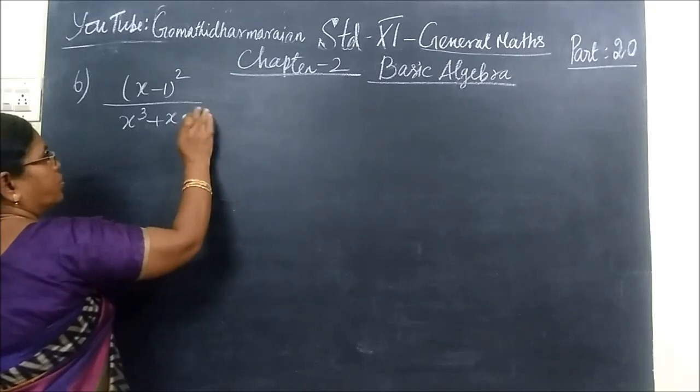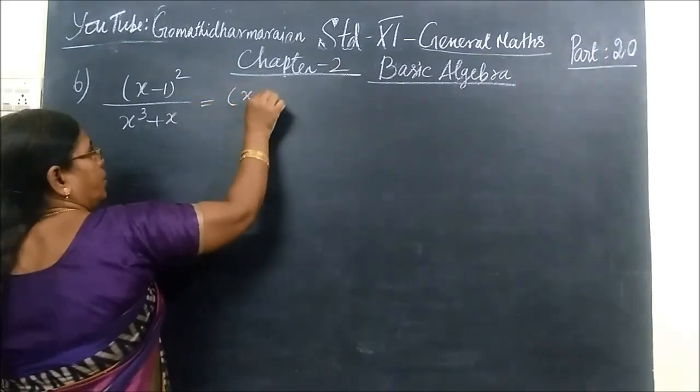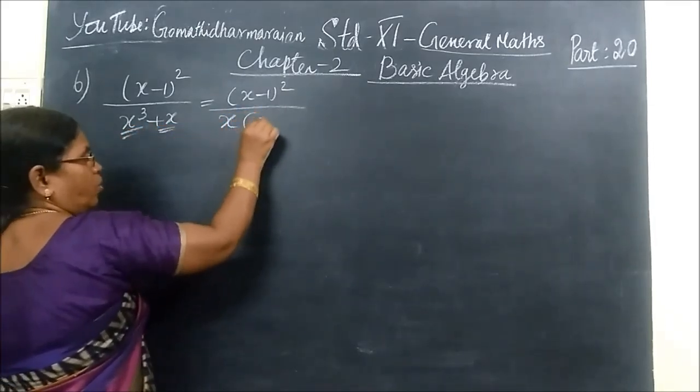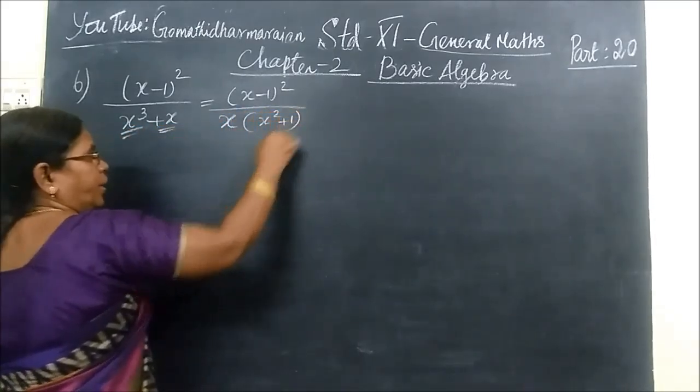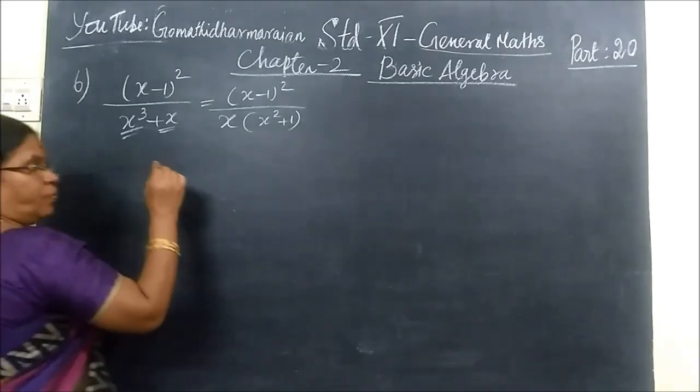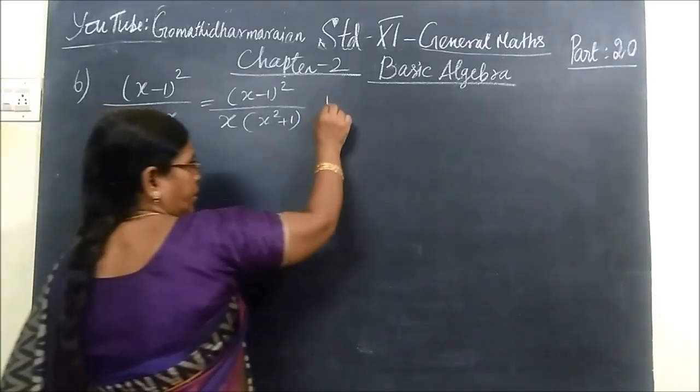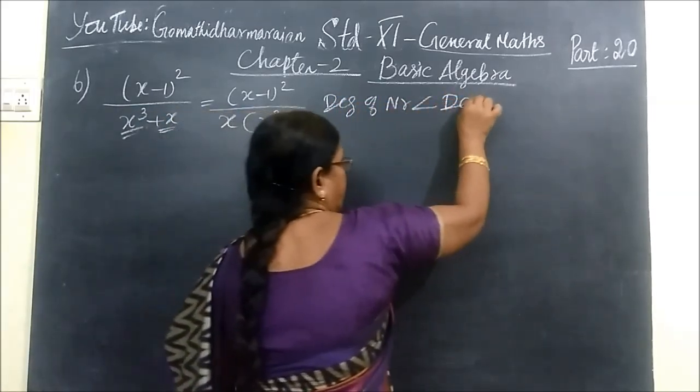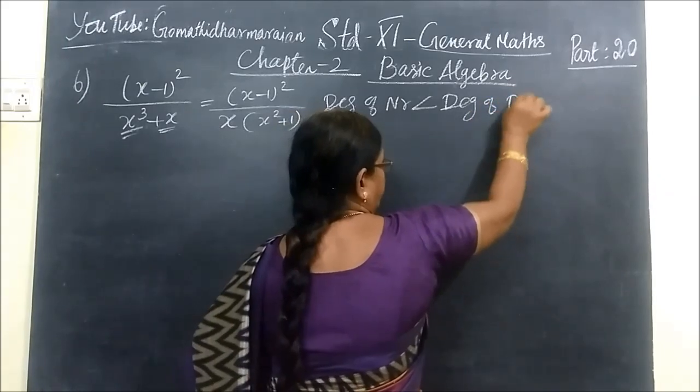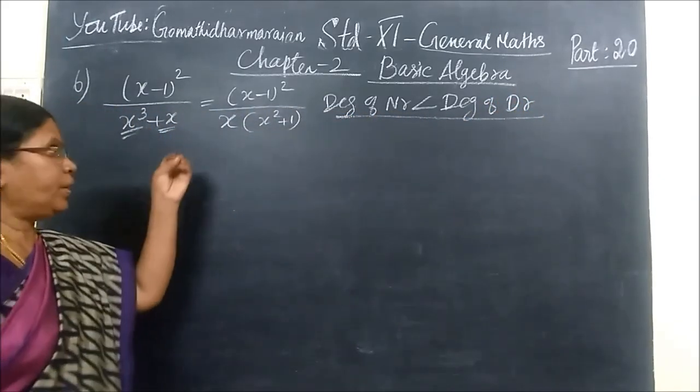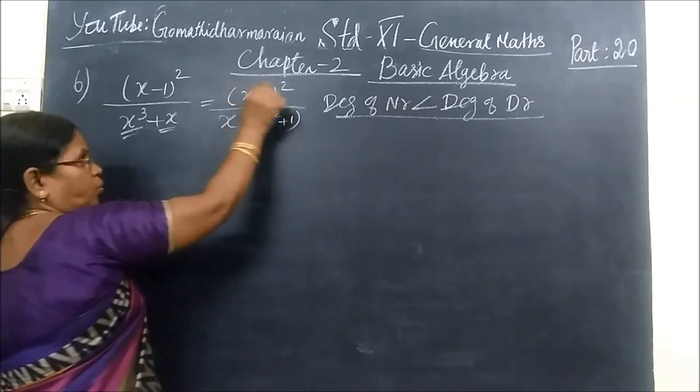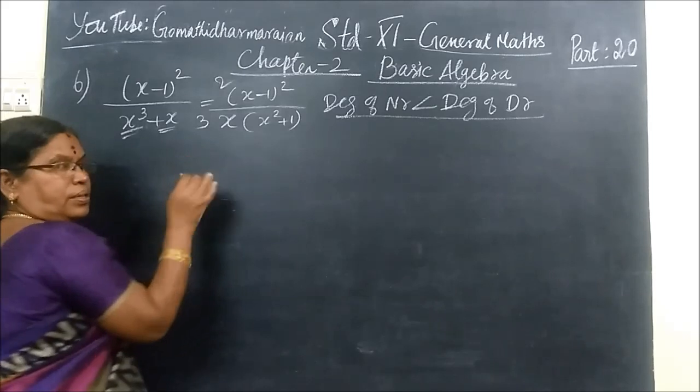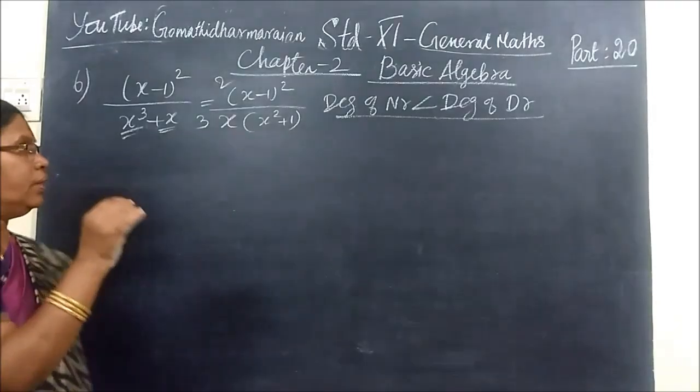Now we do the 6th question. For this you write (x-1)² divided by, you take x common, x(x²+1). So you take x common, so write x²+1. And every time you check whether degree of numerator is less than degree of denominator. Every time you have to check it. Degree of numerator here will be degree 2. Here will be degree 2. Here will be degree 3. So this is correct. And the degree of numerator should be less than the denominator.